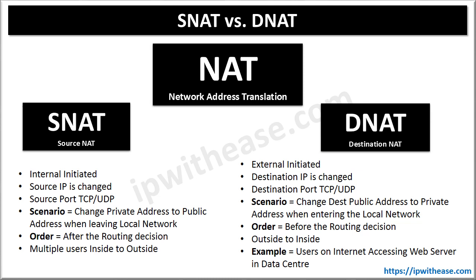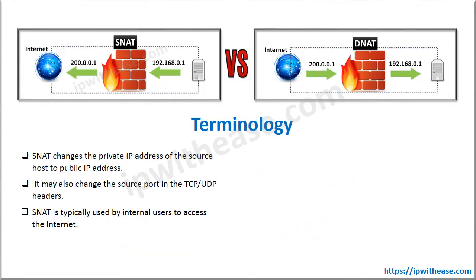Users over the internet accessing a web server hosted in a data center is a typical example where DNAT is used to hide the private address of the web server. The NAT device translates the public destination IP — reachable to internet users — to the private IP address of the web server.